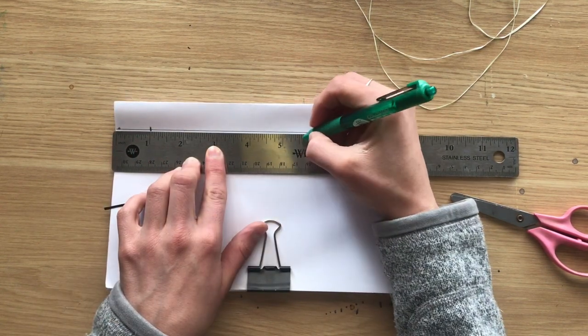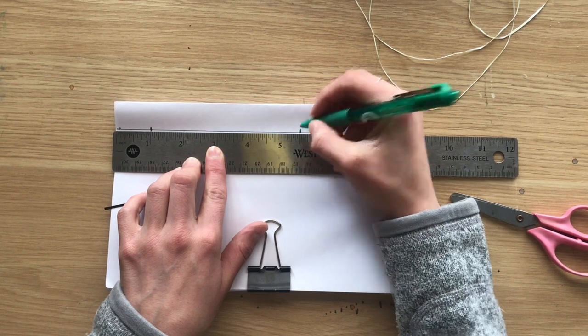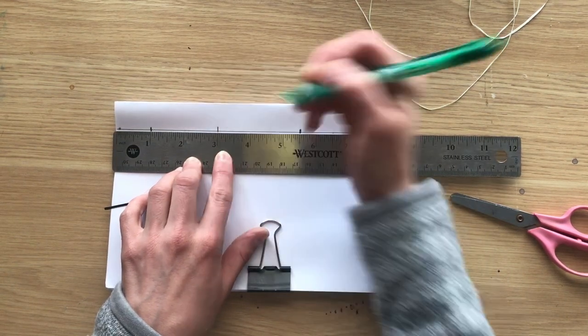To properly bind our book, we need four holes. So you're going to make a tick mark on the five and a half, and a tick mark on the three inch mark as well.